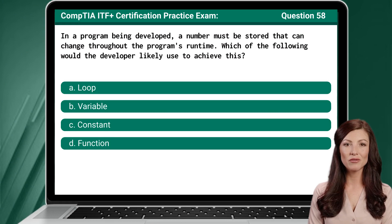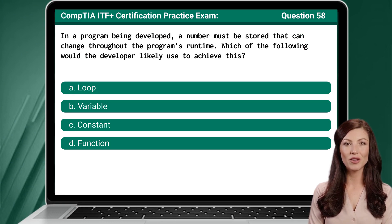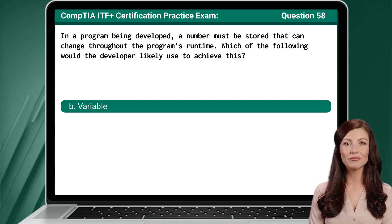Question 58. In a program being developed, a number must be stored that can change throughout the program's runtime. Which of the following would the developer likely use to achieve this? The answer is B: Variable.